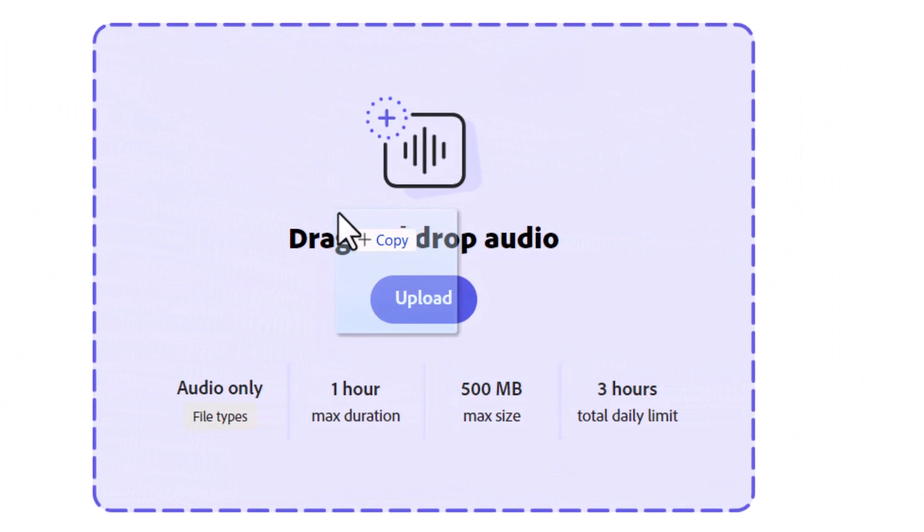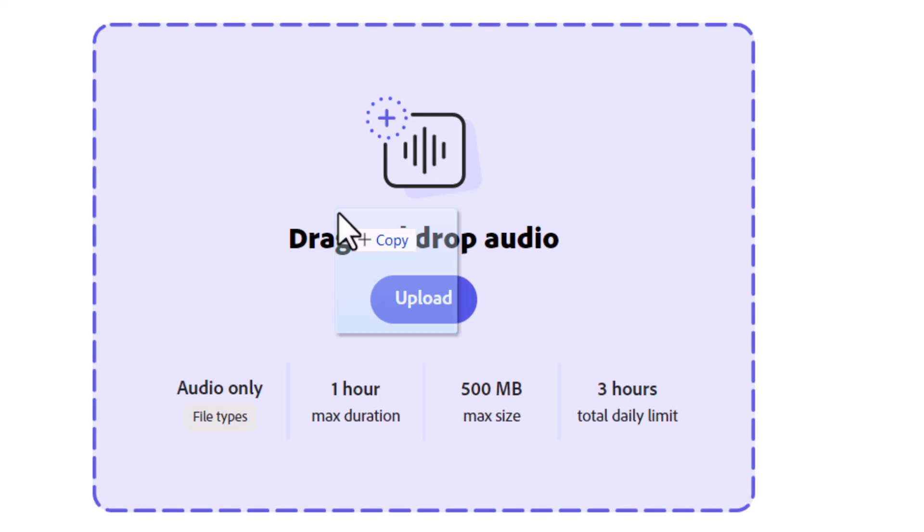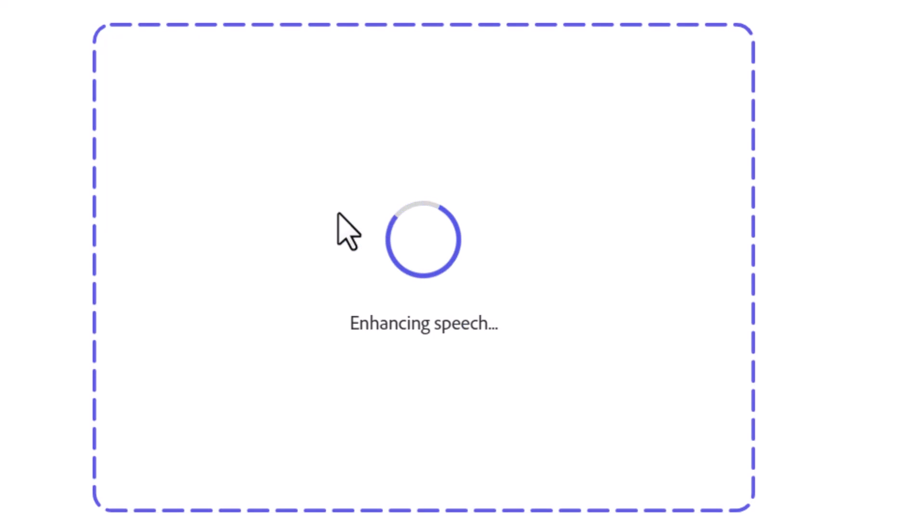We now have our sample audio file and we're going to upload it to Adobe Podcast. We have our audio file — this is the poor quality audio — and we're going to drag and drop that into the Adobe Podcast Enhance feature, and then it's going to start processing.